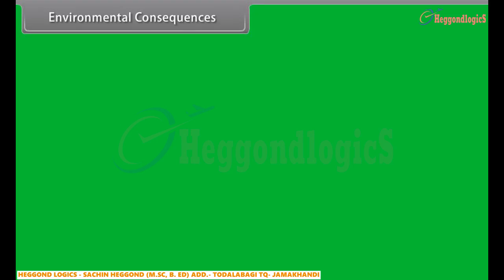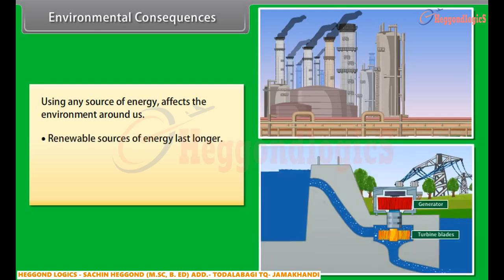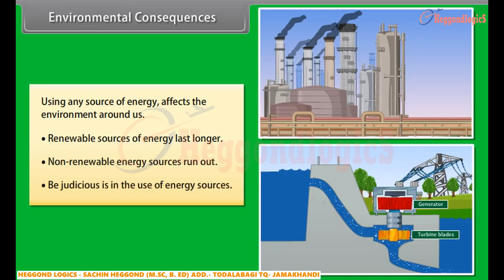Environmental Consequences. Using any source of energy affects the environment around us. Therefore, before exploiting any energy source, ensure that it does not disturb the environmental balance and is harnessed judicially. Renewable sources of energy last for as long as they keep generating, whereas non-renewable energy runs out. We have to be judicious in our selection of energy, considering the purpose of the energy being used and the actual usage.